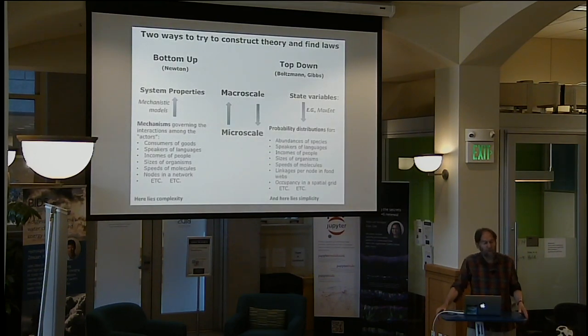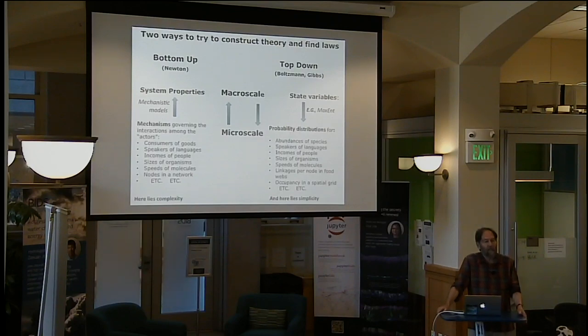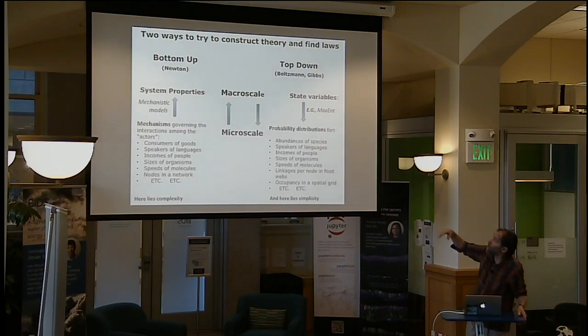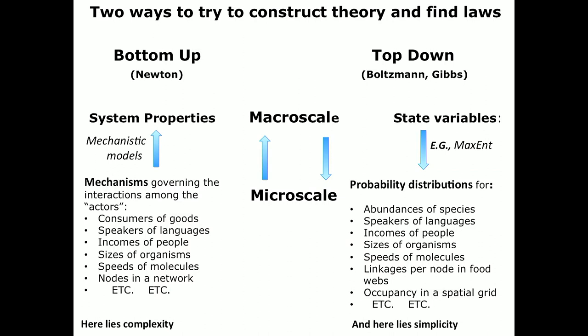In a way, there are two very different ways to construct theory of complex systems, and I call them the bottom-up and the top-down approach. The bottom-up is illustrated by what Newton did — basically going from properties of things at small scale to macro scale, to look at large-scale phenomena as the consequence of the interactions of things that comprise the system.